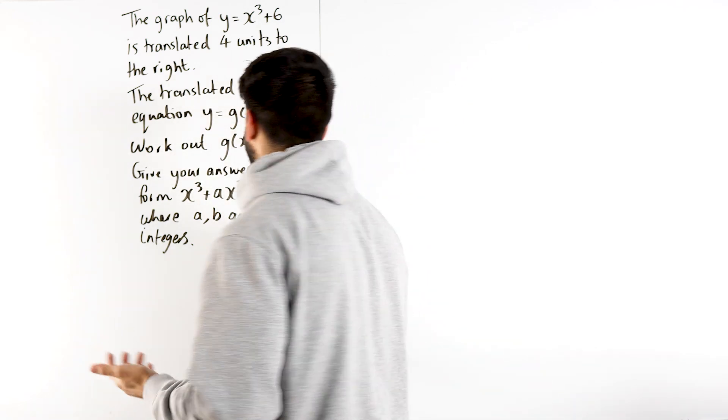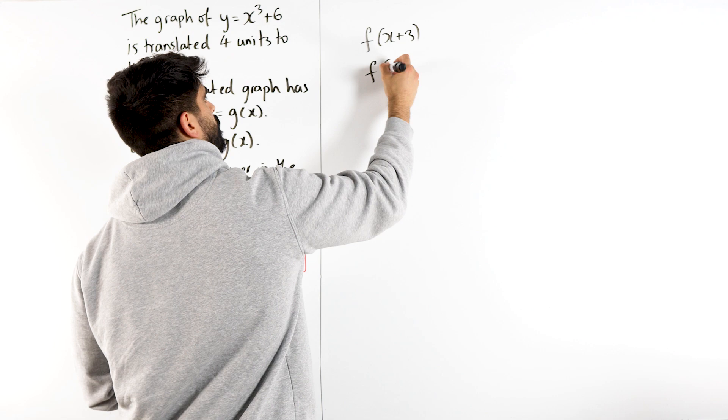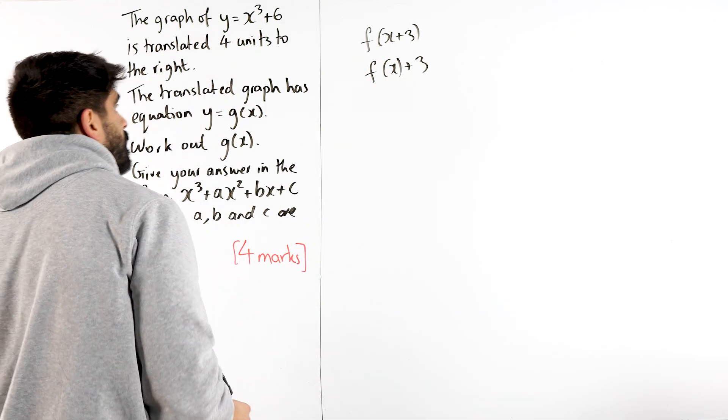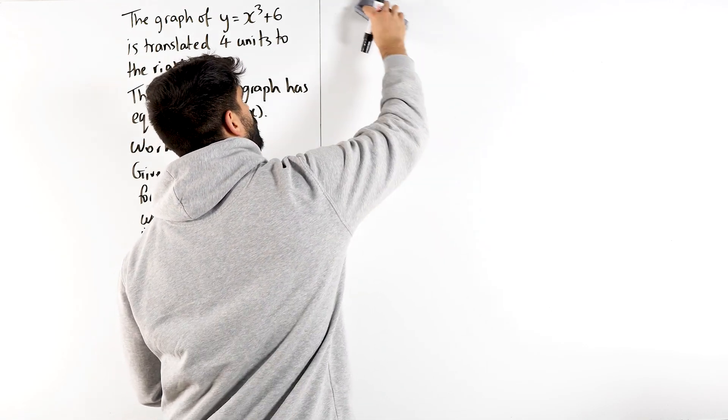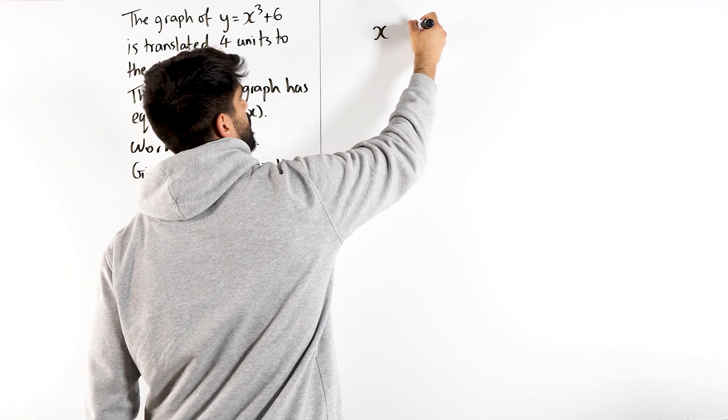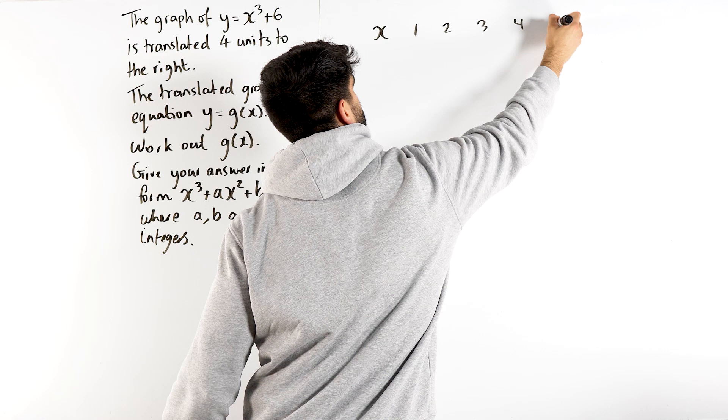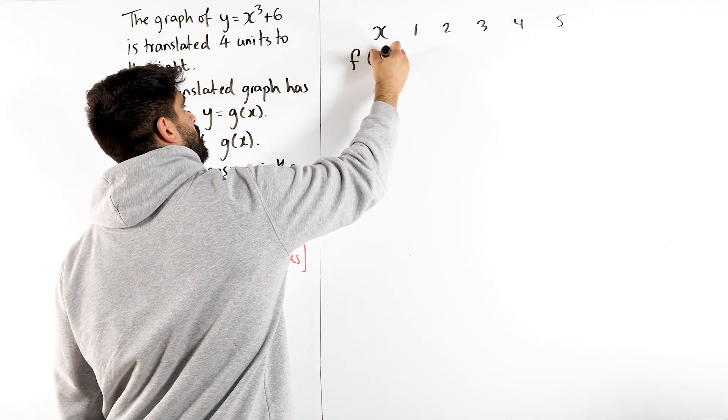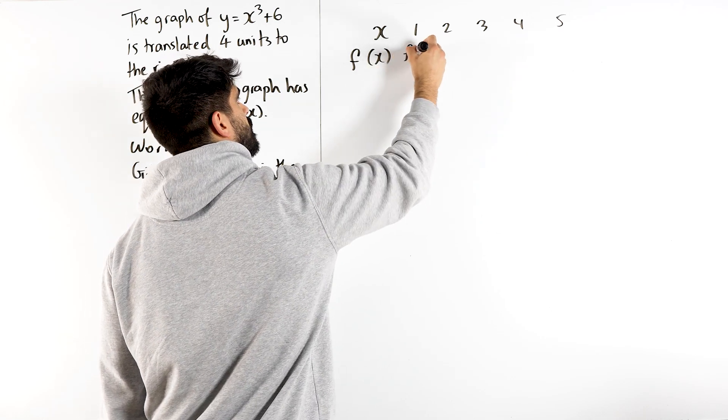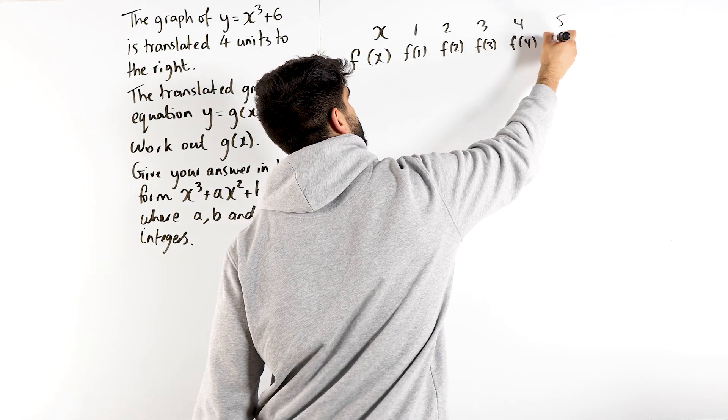Now, what we need to do is establish what's the difference between having something like f of x plus 3 versus f of x plus 3. Like what transformations do these do to the graph? Well, I'm going to do a table for you to help you understand. So let's look at some x values. Let's just keep it simple. 1, 2, 3, 4, 5. And let's look at f of x. So when x is 1, you'll have f of 1, f of 2, f of 3, f of 4, f of 5.